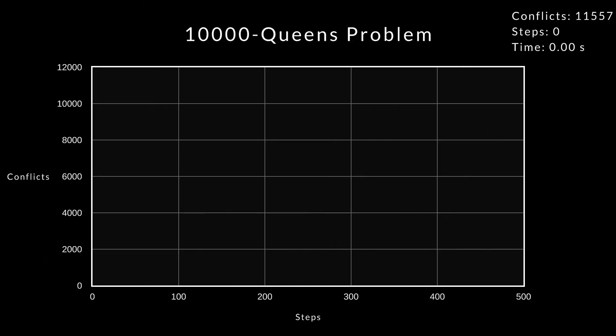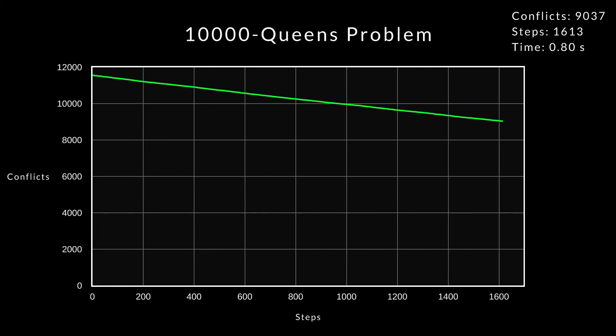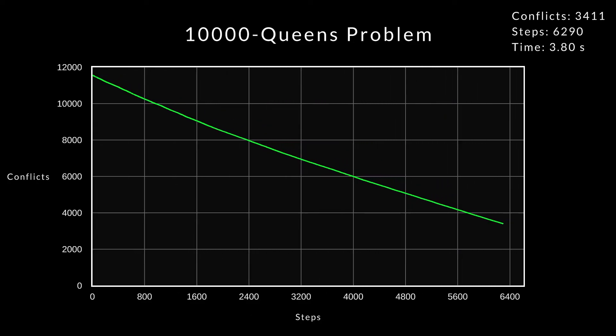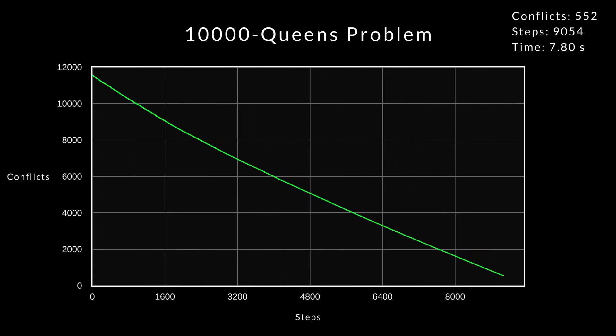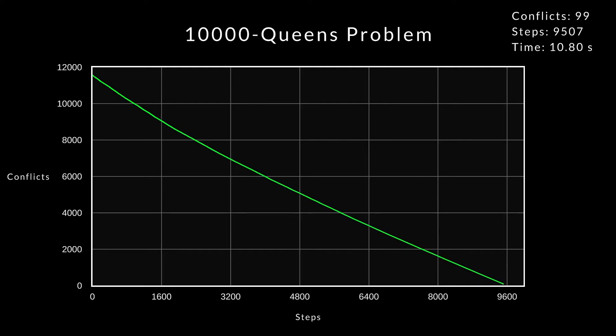Let's try the 10,000 queens problem. It's easy to see that the speed decreases over time. The majority of the time is spent resolving the last few conflicts. Let me speed up this last part for you.